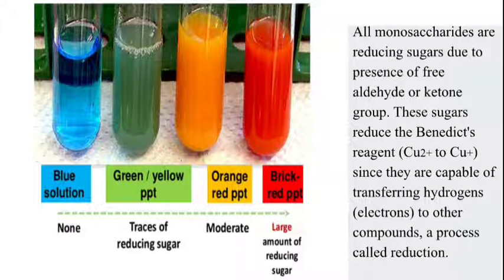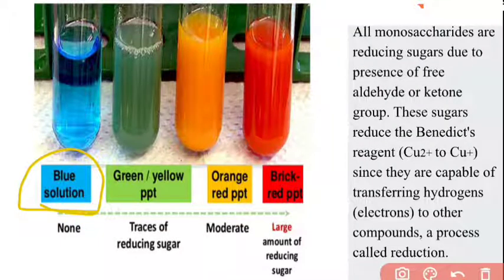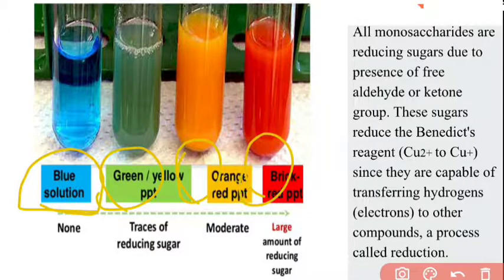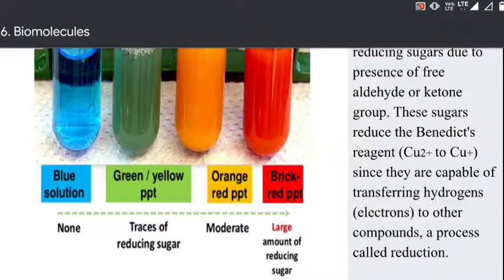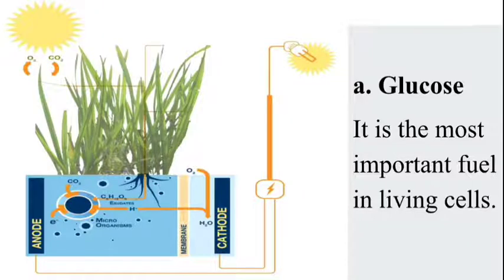When we test a sample for sugar using Benedict's reagent, we add the reagent to the sample and apply heat. As shown in the figure, after adding Benedict's reagent the initial color changes — if monosaccharides are present, the color turns green, then orange, and finally brick red. This color change is the basis of the Benedict's test. Monosaccharides always have either an aldehyde or a ketone group attached, which allows them to transfer hydrogen, detectable by Benedict's reagent.